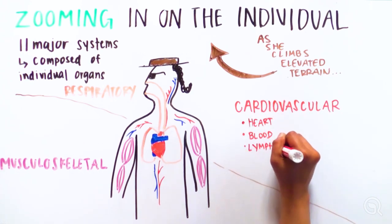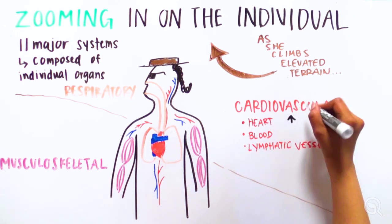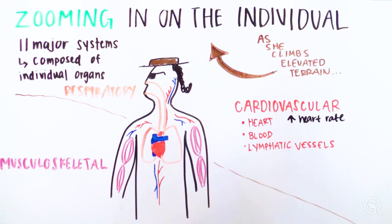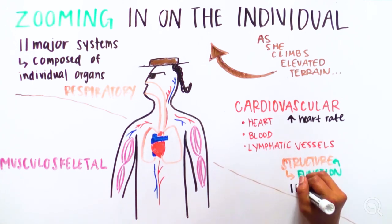The cardiovascular system is made of the heart, blood, and lymphatic vessels that interact to transport essential substances like oxygen to and from all organs and tissues of her body. Structure determines function in a body system.